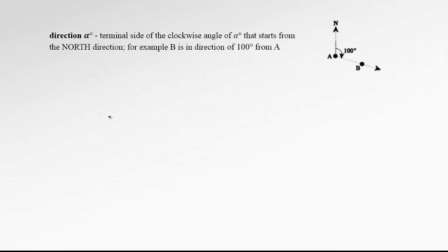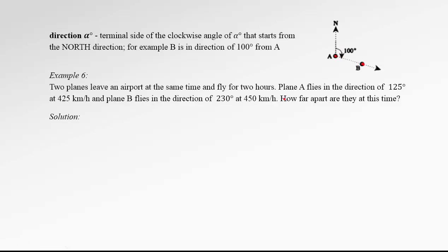We'll do one application problem. Many trigonometric word problems refer to direction or bearing. The direction of alpha degrees is the terminal side of the clockwise angle of alpha degrees starting from the north direction. For example, point B is in the direction of 100 degrees from point A — this terminology is used in navigation.